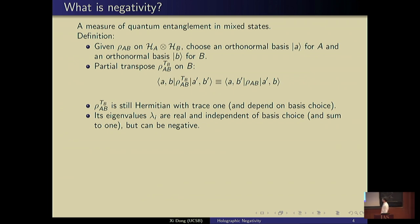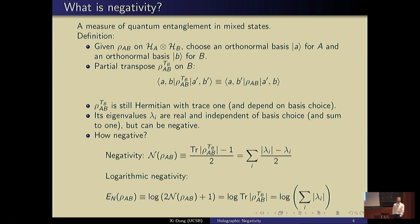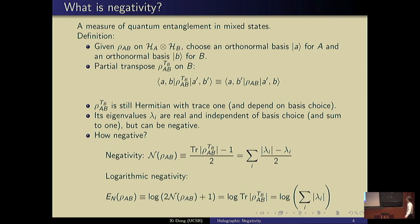The issue with taking the partial transpose is that the eigenvalues can now be negative, which is different from the eigenvalues of a normal density matrix. We can ask how negative these eigenvalues are — this is the origin of the name negativity. The traditional negativity is defined by taking the sum of all the absolute values of the eigenvalues minus the eigenvalues themselves, so only the negative ones contribute.